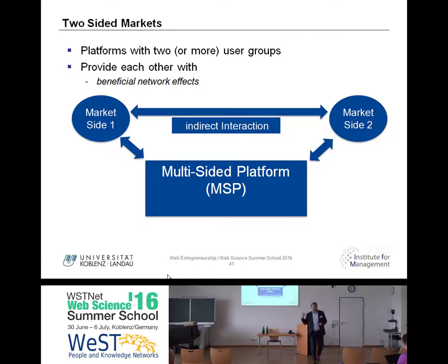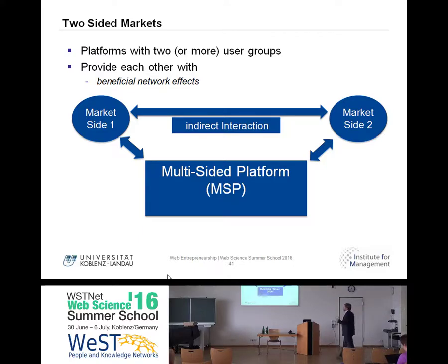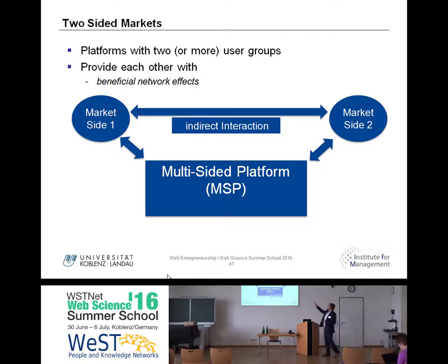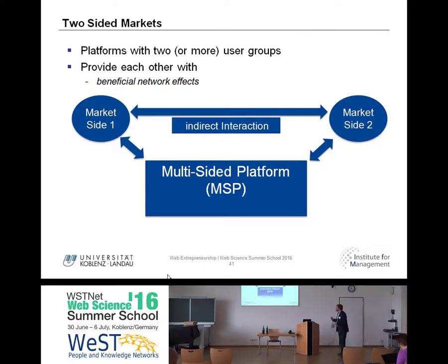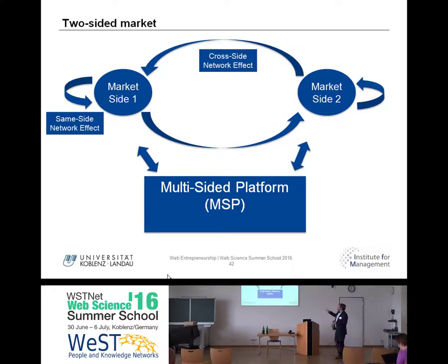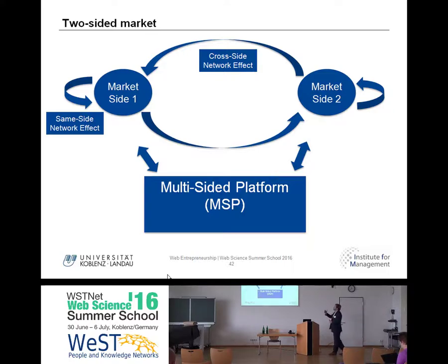Coming to multi-sided platforms — this is typical economics. The more economic term for what Simon described this morning as a triangle would be a two-sided or multi-sided platform, where you have different market sides and barely a direct interaction — usually the interaction goes via the platform. This is typical for almost every web startup. There are two network effects: the same-side network effect and the cross-side network effect, and the cross-side is really interesting when it comes to web entrepreneurship.